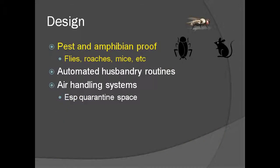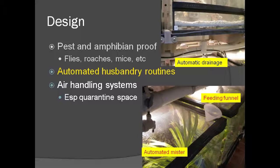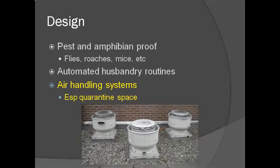Aspects of the facility and enclosure design can also impact biosecurity. Facilities should be both pest and amphibian proof. Flies, roaches, mice, and amphibians can serve to spread pathogens from one area of the facility to the next. Automated husbandry routines can reduce the contact of the keeper with the animals and thus reduce the risk of spreading pathogens — for example, water added through automatic misters, food added through a funnel, and water drained through pipes in the floor. Air handling systems can also transmit pathogens, and quarantine spaces should not share the same air handling system as other areas.